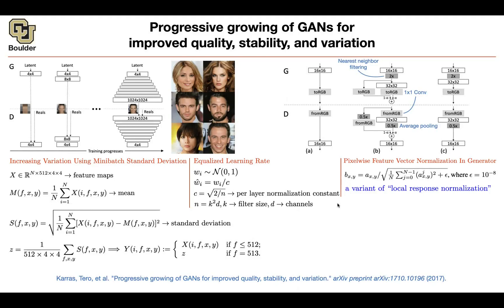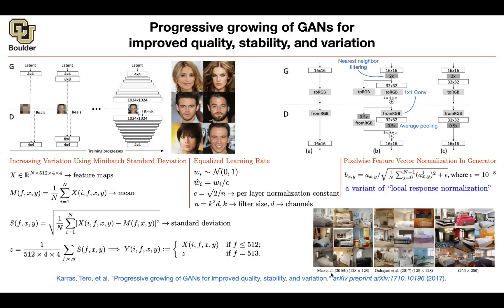As for the loss function, you have multiple options: you can use Wasserstein GAN-type loss functions or Least Squares GAN-type loss functions. Either will work fine, and you can scale up to high resolution. The results are now high resolution images that look much better — these are generated images at 1,024 by 1,024.